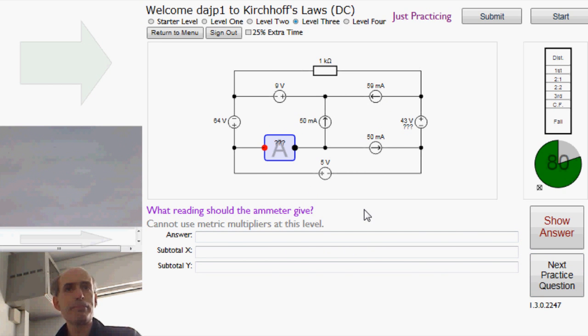An ammeter one. Right. So we're looking for a node. Ah, actually, that's quite easy. Apply Kirchhoff's current law to that node there.